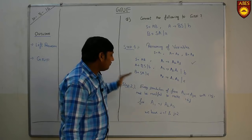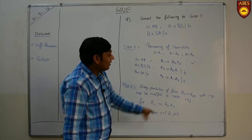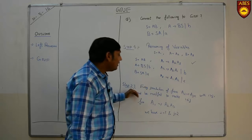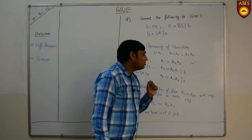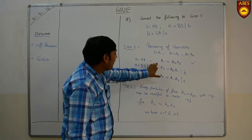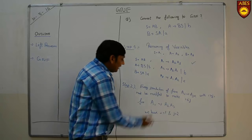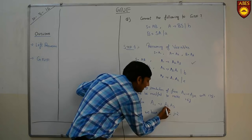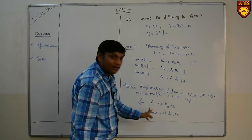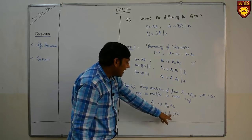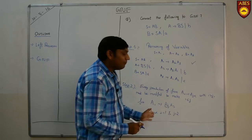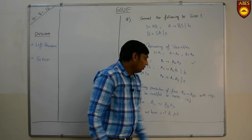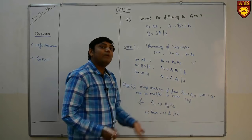Step 2 says that every production of the form where Ai tends to form Aj alpha with i greater than j should be modified to make i less than or equal to j. For A1 forming A2 A3, i equals 1 and j equals 2, so i is not greater than j and we don't need to modify it.